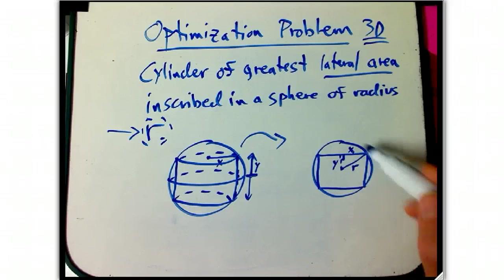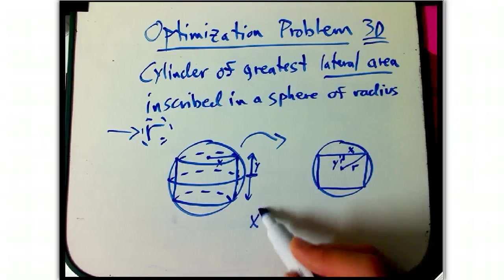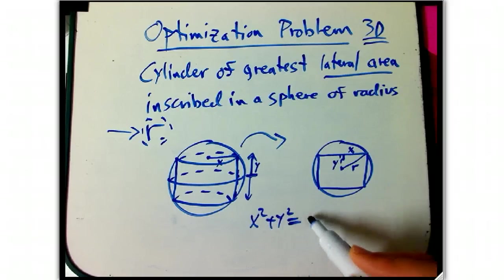Hey, I've got a right triangle, that's a constraint right there. Okay, so we've discovered our constraint, X squared plus Y squared equals R squared.